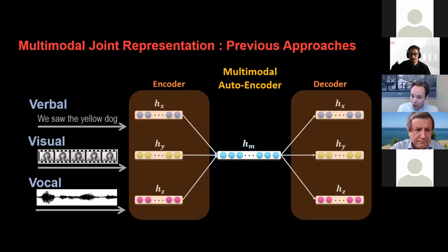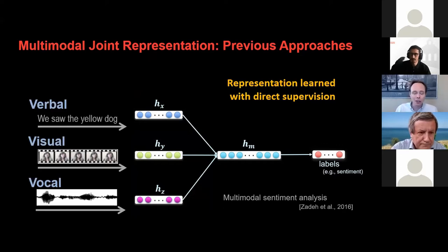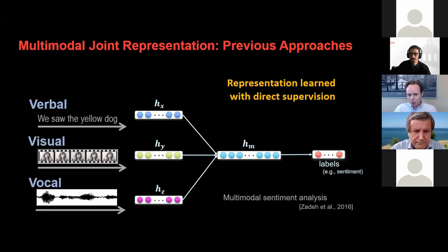Currently, the most popular approach by a large margin is direct supervision, where the joint representation is learned for specific tasks. There's also a lot of interest in self-supervised learning, which is gaining popularity, but right now when we think of joint representation in multimodal, we see a lot of direct supervision. However, direct supervision and joint representations come at a price — you almost 'smoosh' all the information together.